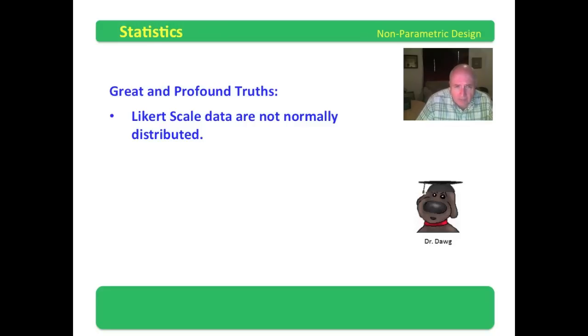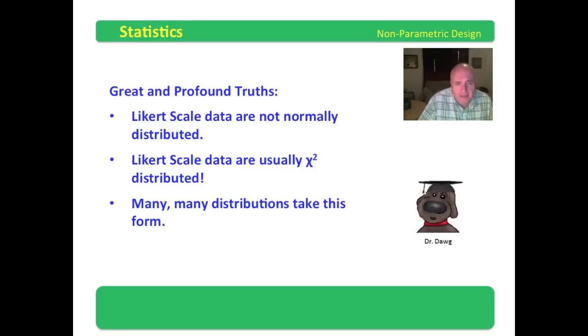And they are generally more chi-square distributed than they are, much more so than they would ever be normally distributed. Likert scale data are usually chi-square distributed. They're not normally distributed. And many, many distributions take this form. That's why this form is so important.